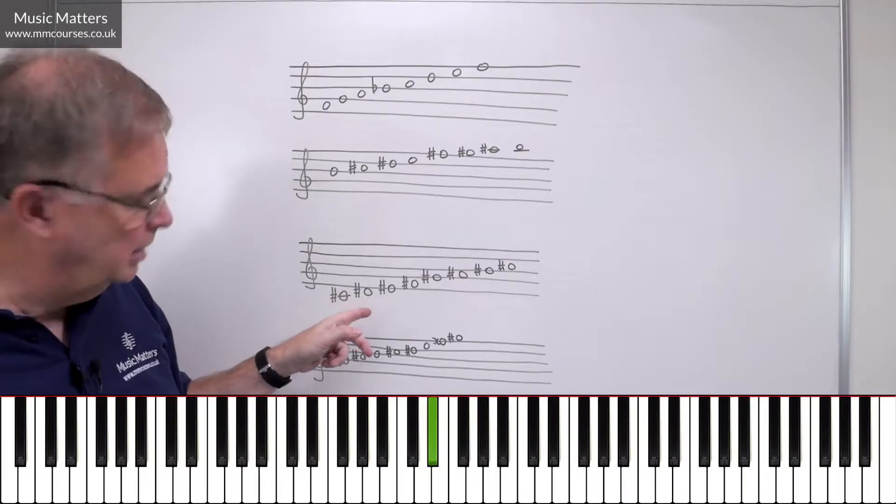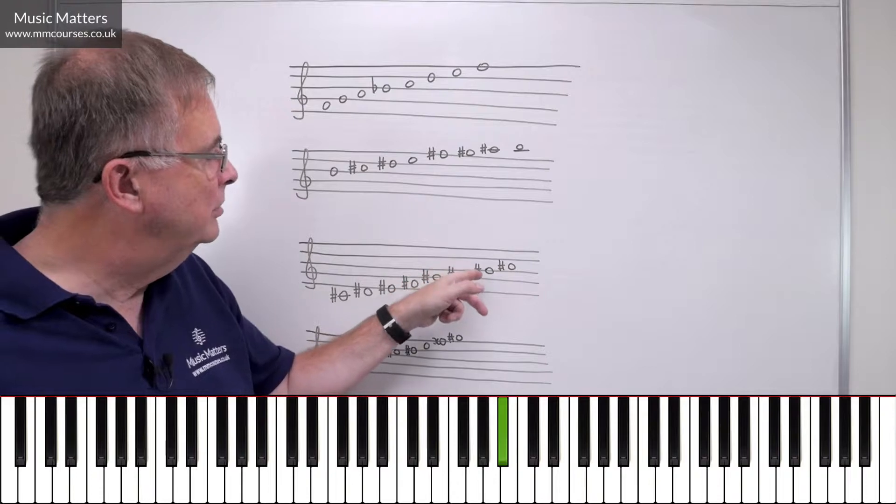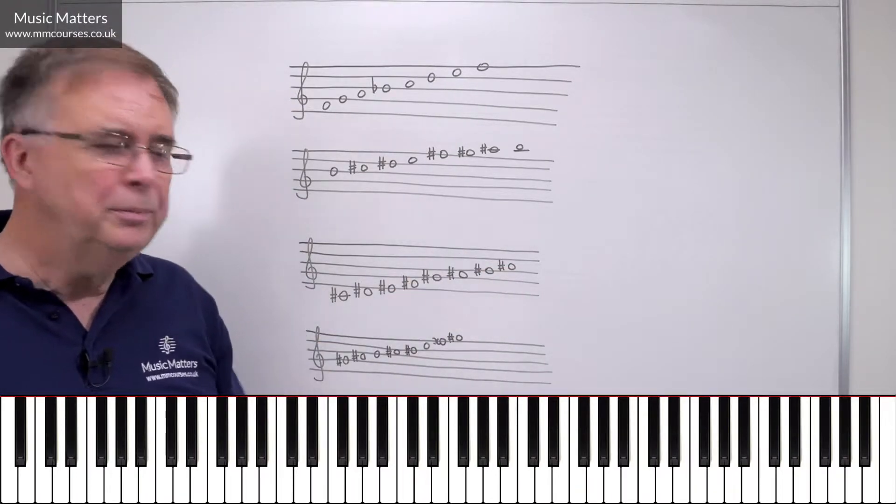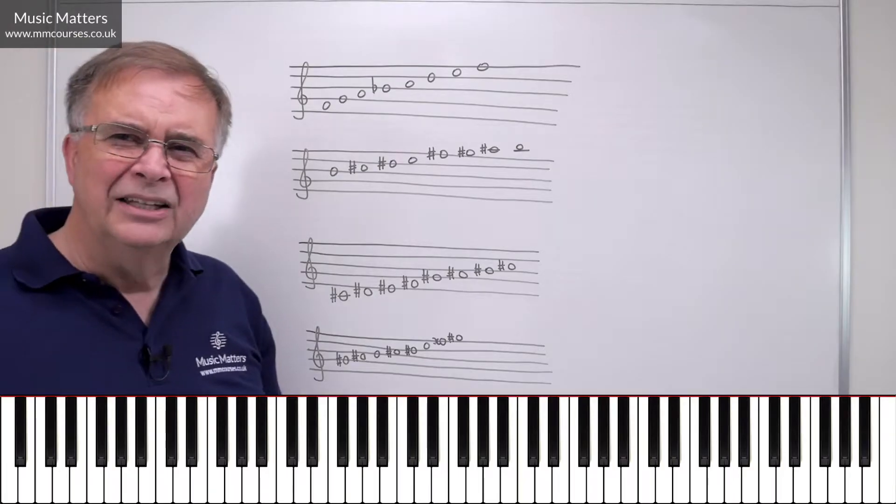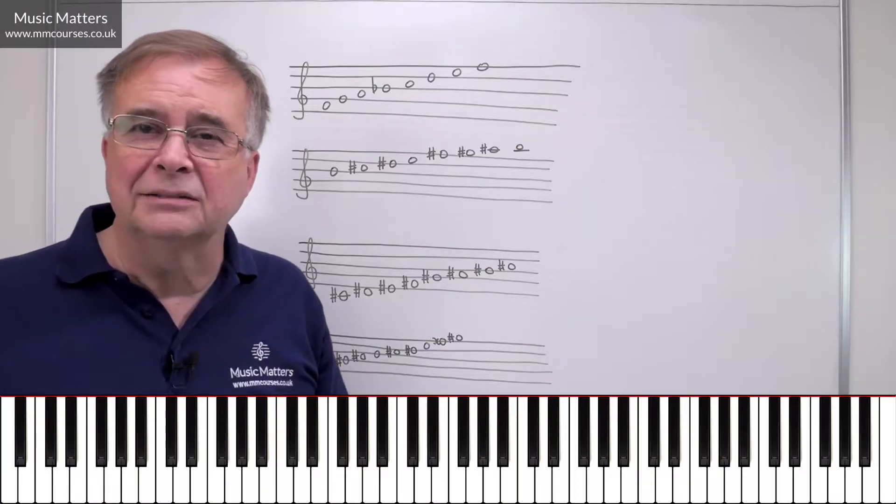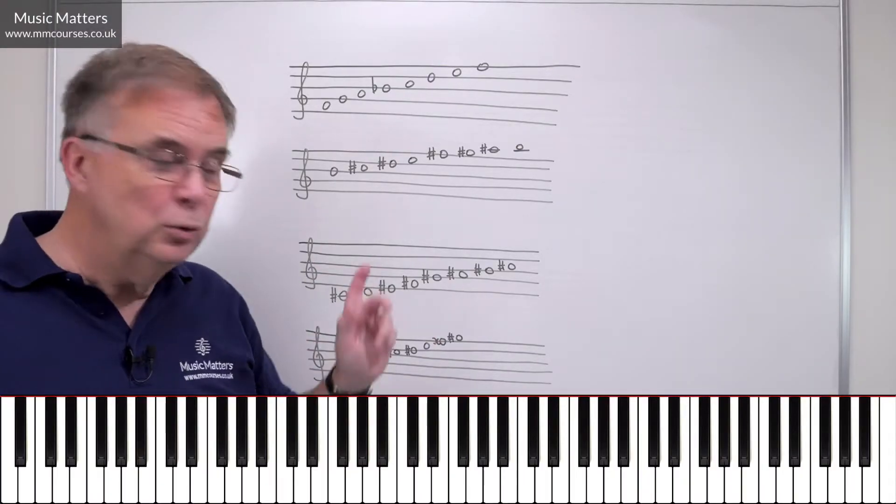C-sharp, D-sharp, E-sharp, F-sharp, G-sharp, A-sharp, B-sharp, C-sharp. And I've had a few people write to me recently saying, well, I don't understand why you're talking about E-sharp and B-sharp, because they don't exist. Well, I'm afraid they do exist. And now hopefully you can see why.